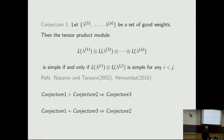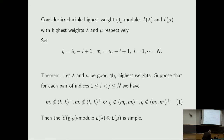Audience question: You mentioned highest weight — is it interesting to consider the lowest weight case, or is there no benefit? Response: I think we can construct some lowest weight modules by using the isomorphism between Yangians. If we have a highest weight module, we can use the isomorphism between Yangians to construct a lowest weight module.